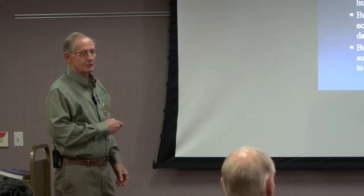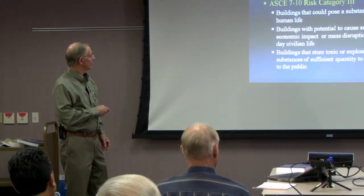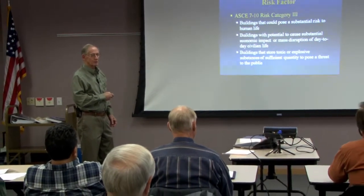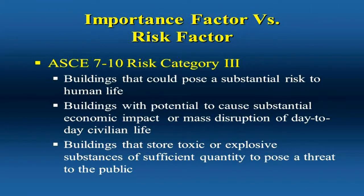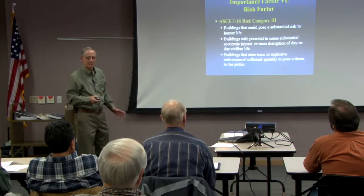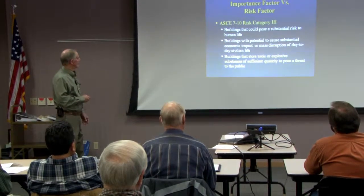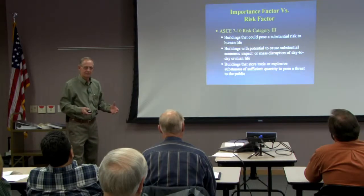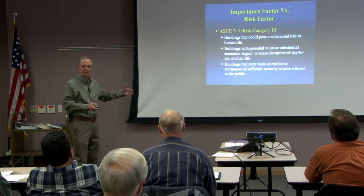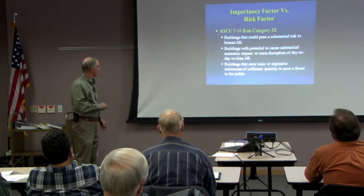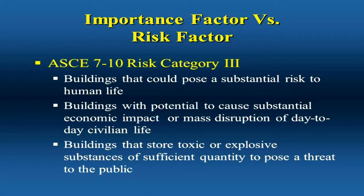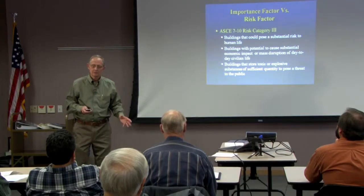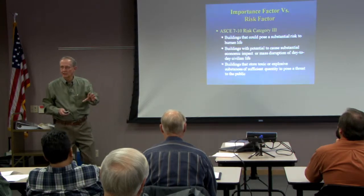In ASCE 7-10, the risk category 3 definition is a lot more general. It says buildings that could pose a substantial risk to human life — whatever that is; that's going to be up to you to decide. Buildings with potential to cause substantial economic impact or mass disruption of day-to-day activities. You can start to see some of the same categories as the old version, but not necessarily.